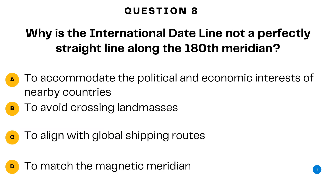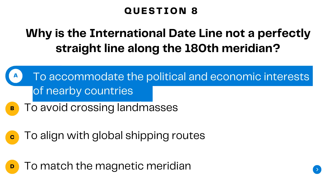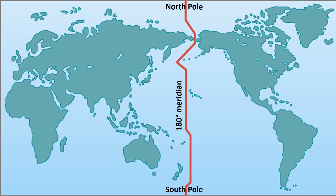Question number eight. Why is the international dateline not a perfectly straight line along the 180 degree meridian? A. To accommodate the political and economic interests of nearby countries. B. To avoid crossing landmasses. C. To align with global shipping routes. D. To match the magnetic meridian. The answer is A — to accommodate the political and economic interests of nearby countries. The international dateline is not a perfectly straight line primarily due to practical and geopolitical considerations.